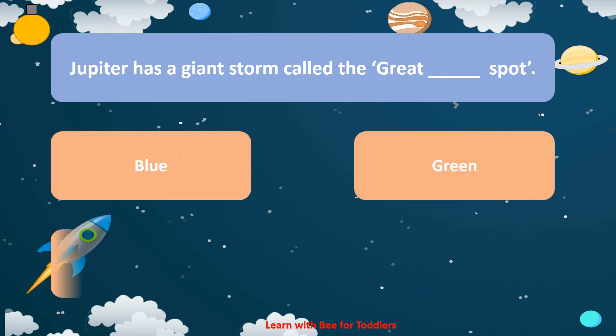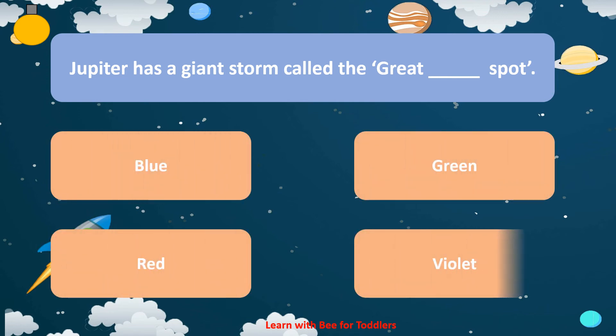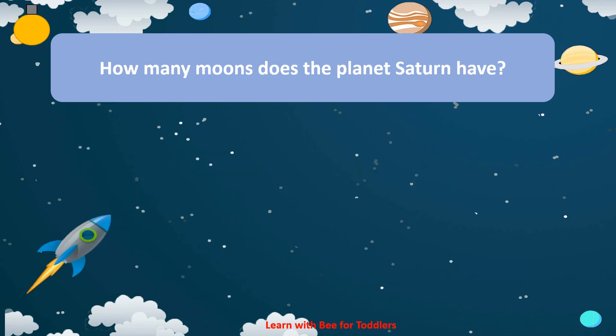Green. Red. Violet. Red. How many moons does the planet Saturn have? 65.